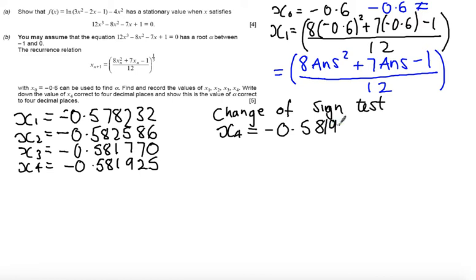So if I was to round this to four decimal places this x4 would be minus 0.5819. What I want to show is that the largest value that rounds to this, that the root lies between the largest value that rounds down to minus 0.5819 and the lowest value that would round up to 0.5819.